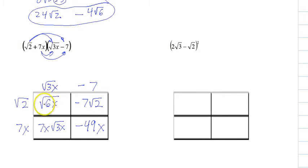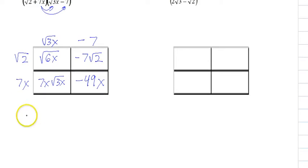And then we look at our radicals. No pairs, no pairs, no pairs. It's done. So we just write it out. Square root of 6x minus 7 square root of 2 plus 7x square root of 3x minus 49x, and that's it.